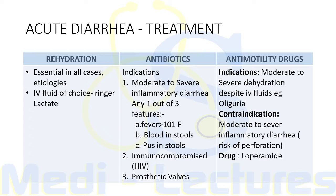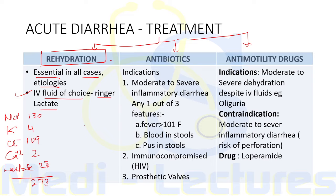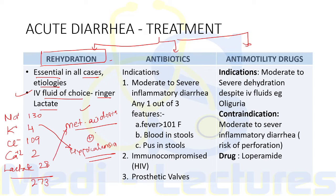Treatment of acute diarrhea involves rehydration, antibiotics, and anti-motility drugs. Rehydration is essential in all cases. IV fluid of choice is Ringer's lactate because most diarrheas involve metabolic acidosis along with hypokalemia due to loss of bicarbonate and potassium; the lactate corrects metabolic acidosis and the potassium addresses hypokalemia. Antibiotics are indicated for moderate to severe inflammatory diarrhea, immunocompromised patients like HIV, or patients with prosthetic valves to prevent infective bacterial endocarditis.